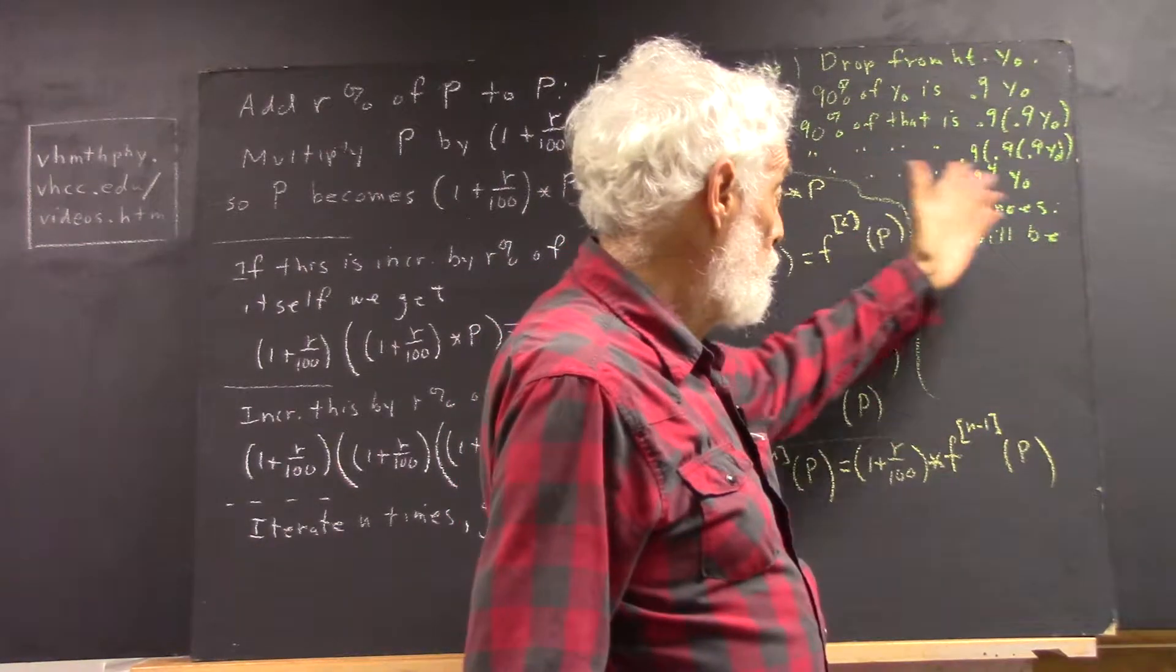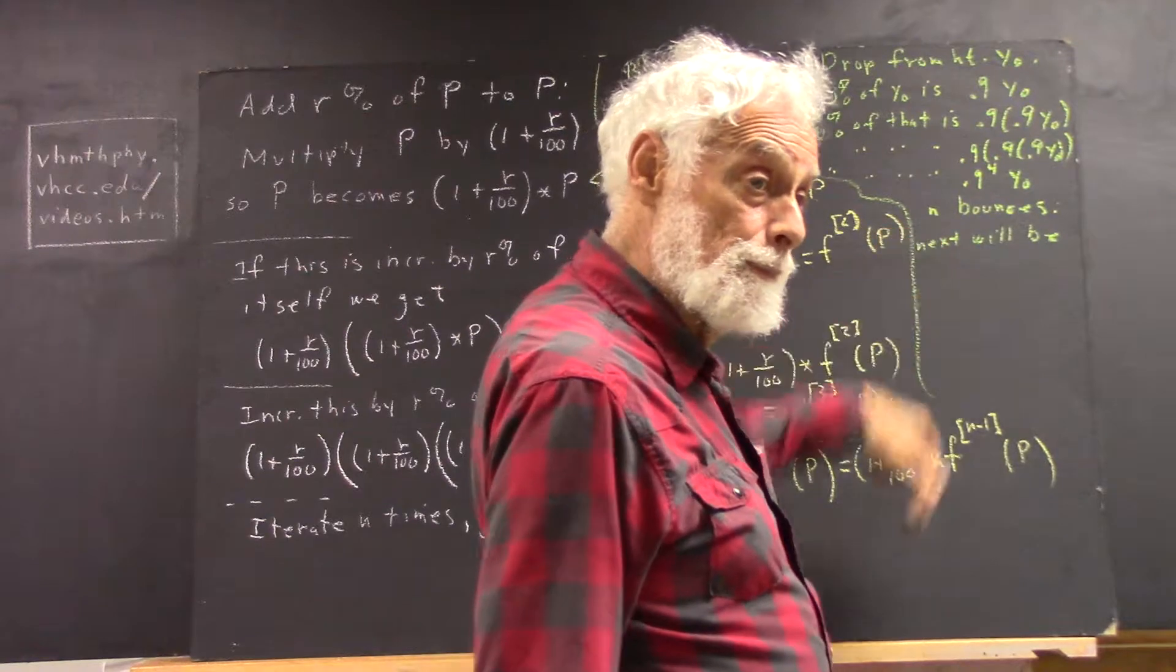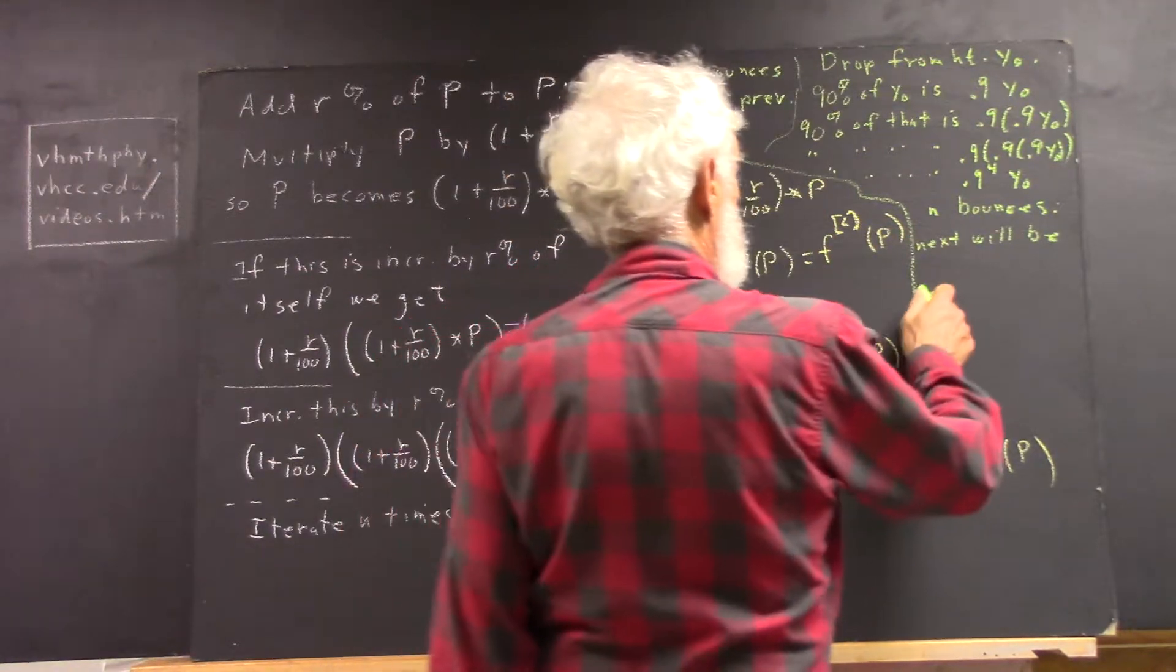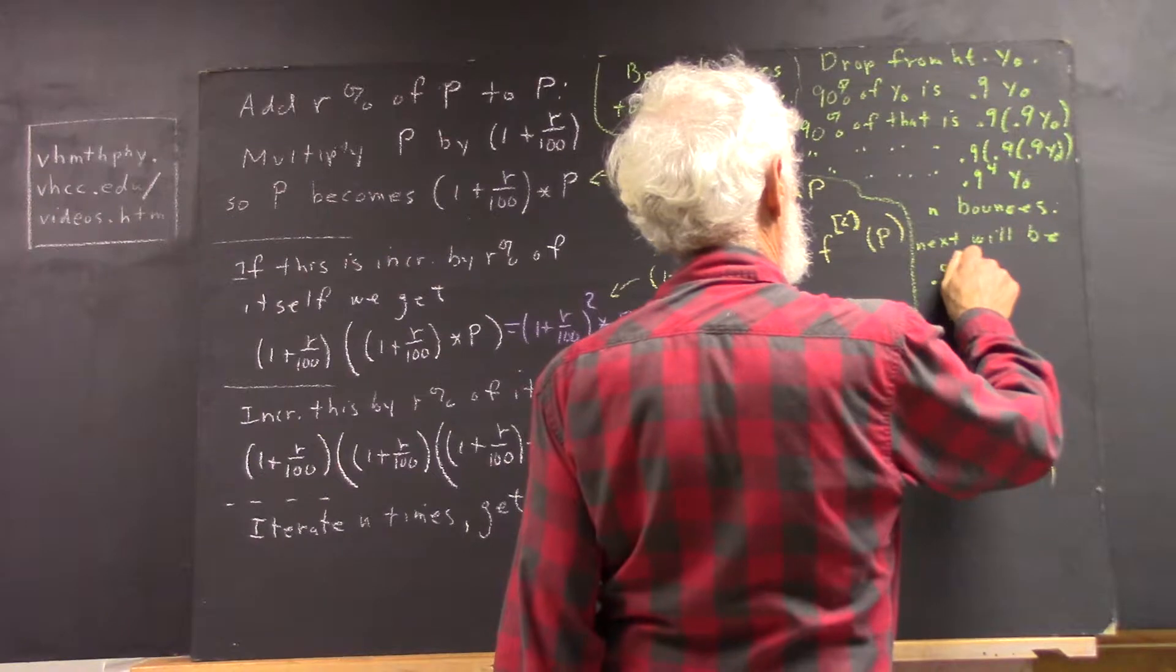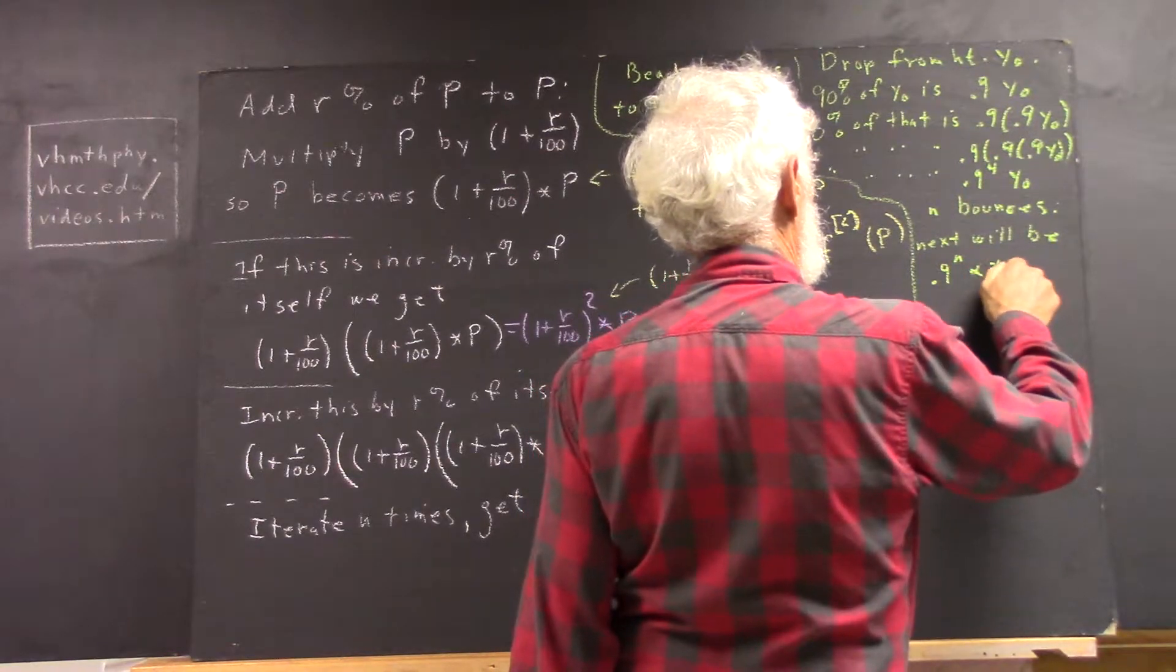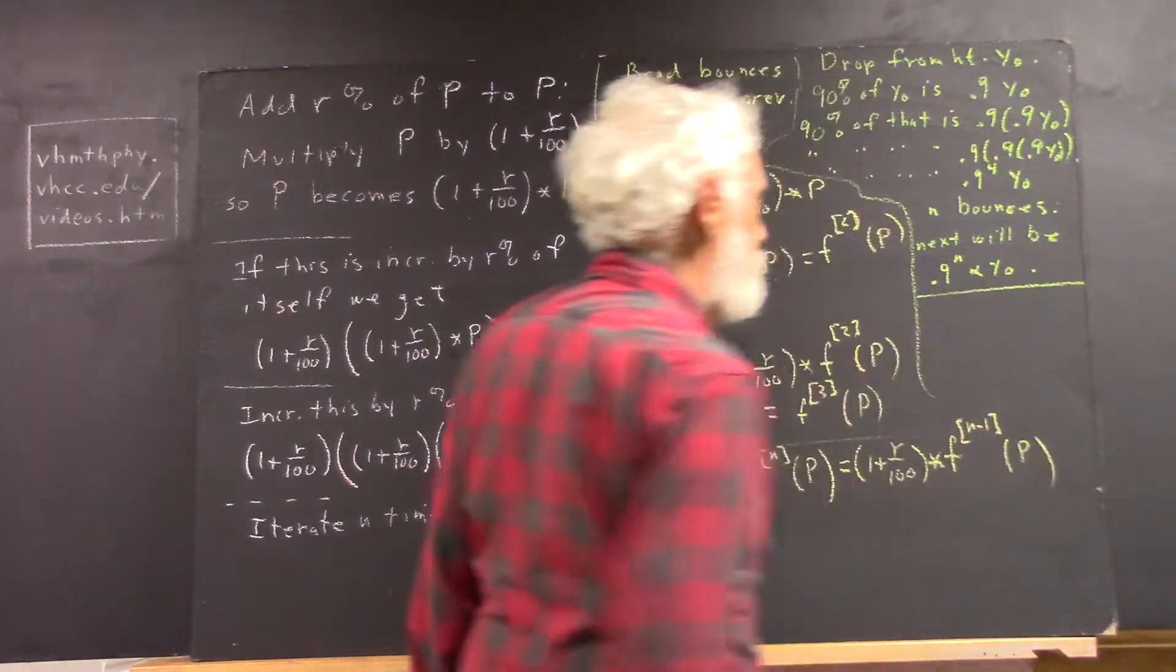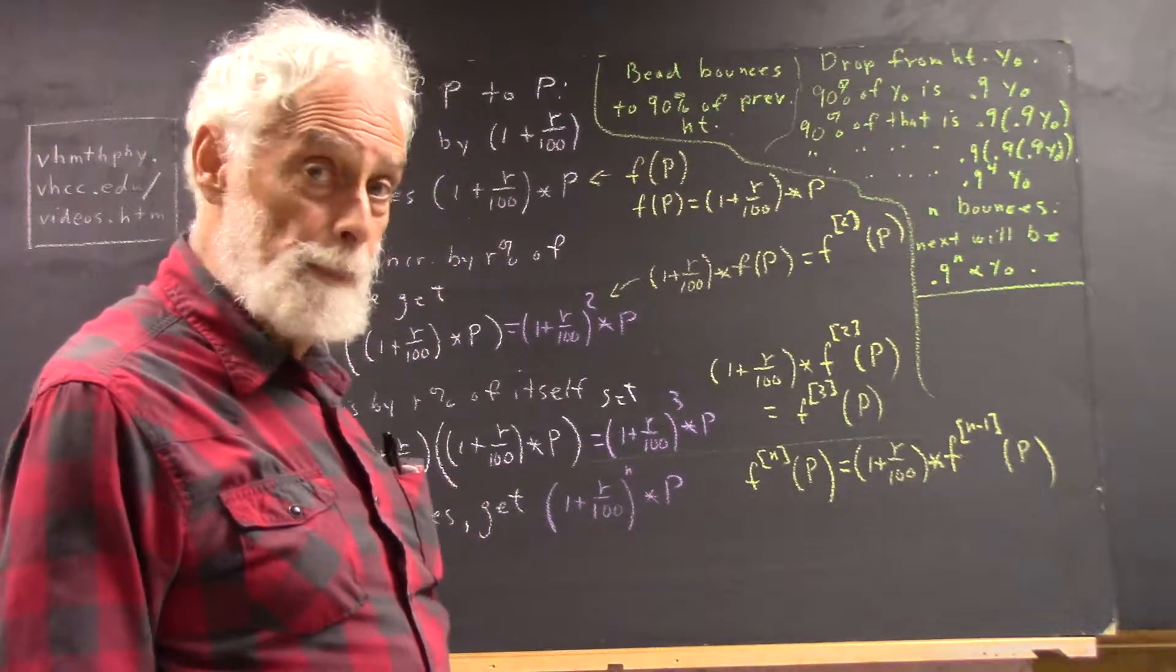So we're going to have to multiply by 0.9 N times, 0.9 to the N times 0.9 to the N times 0.9 why not.